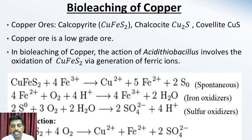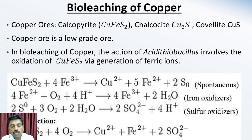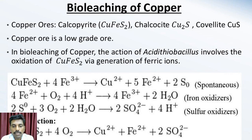The third part is bio-leaching of copper. Copper ore is a low-grade ore. Ores of copper from which copper is recovered are chalcocite, chalcopyrite, and covellite. Copper leaching is operated as simple heap leaching as well as in-situ leaching process. Dilute sulfuric acid is percolated down through the pile, and liquid coming out of the bottom of the pile, which is rich in minerals, is collected and transported to the precipitation plant.